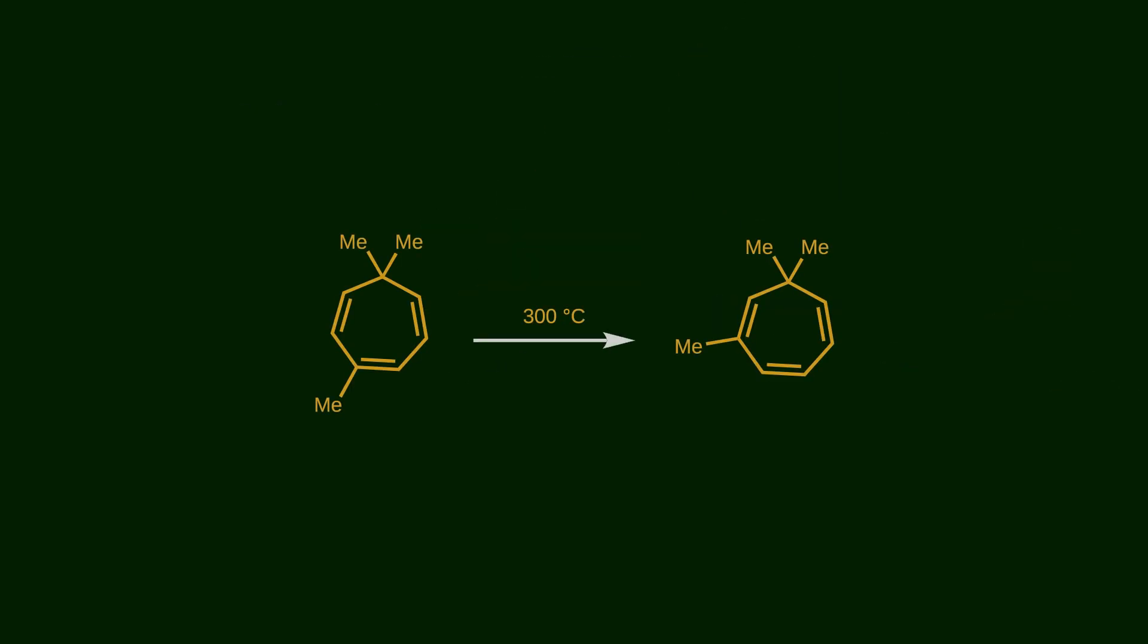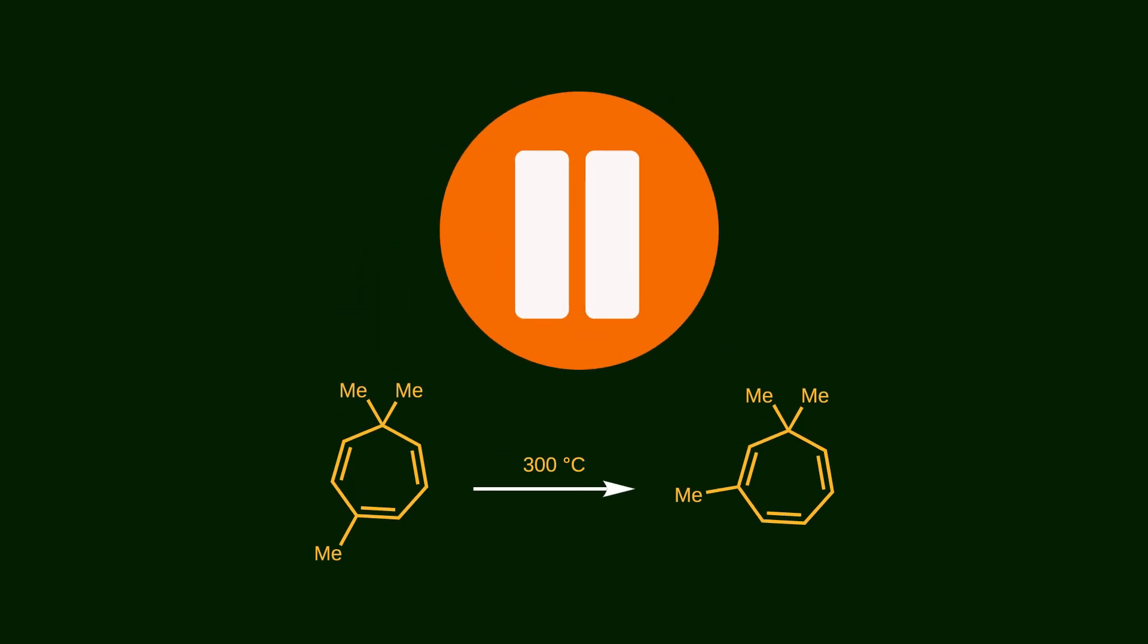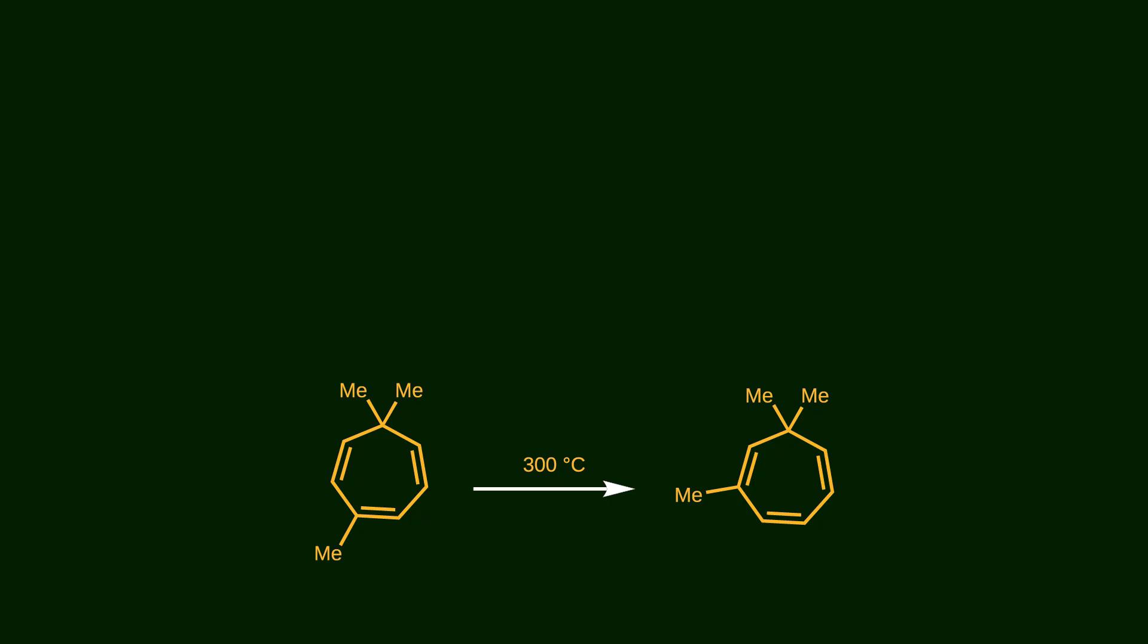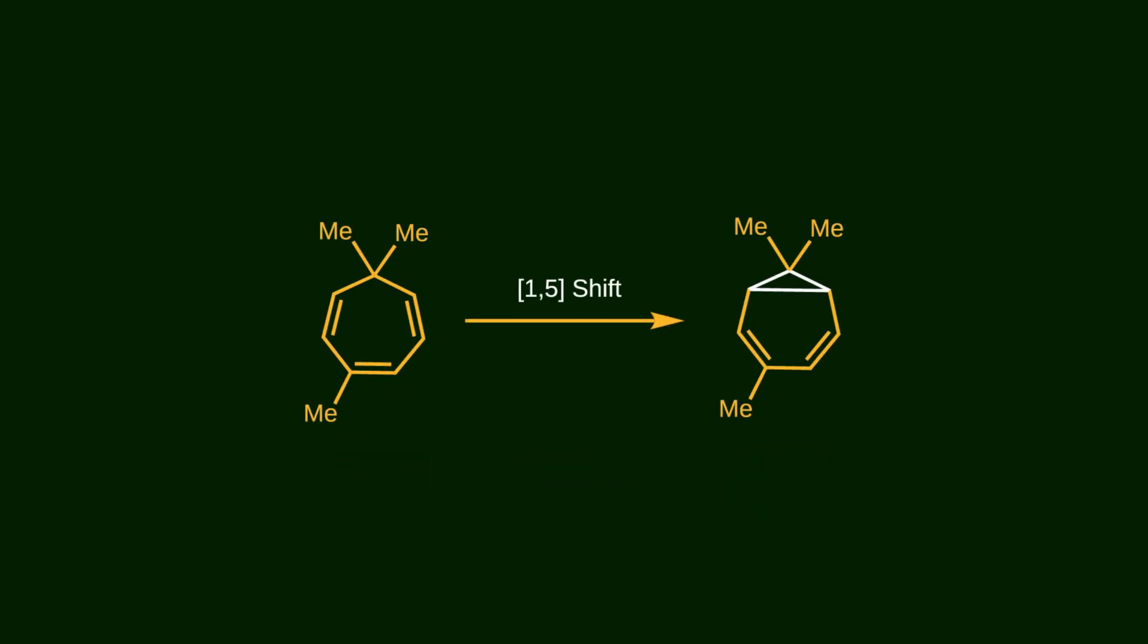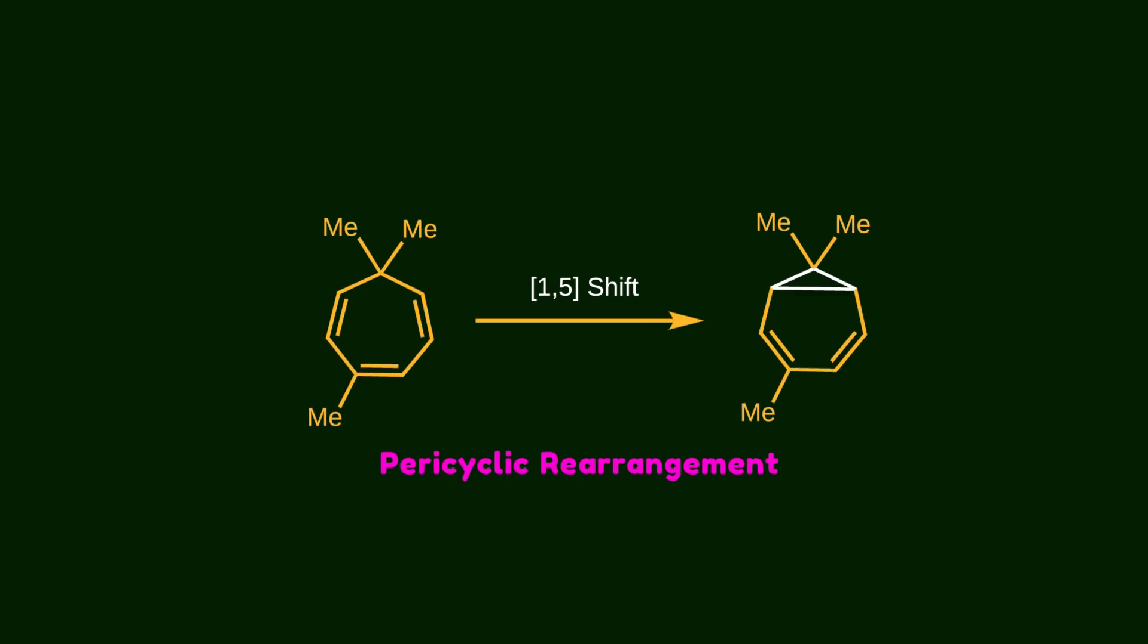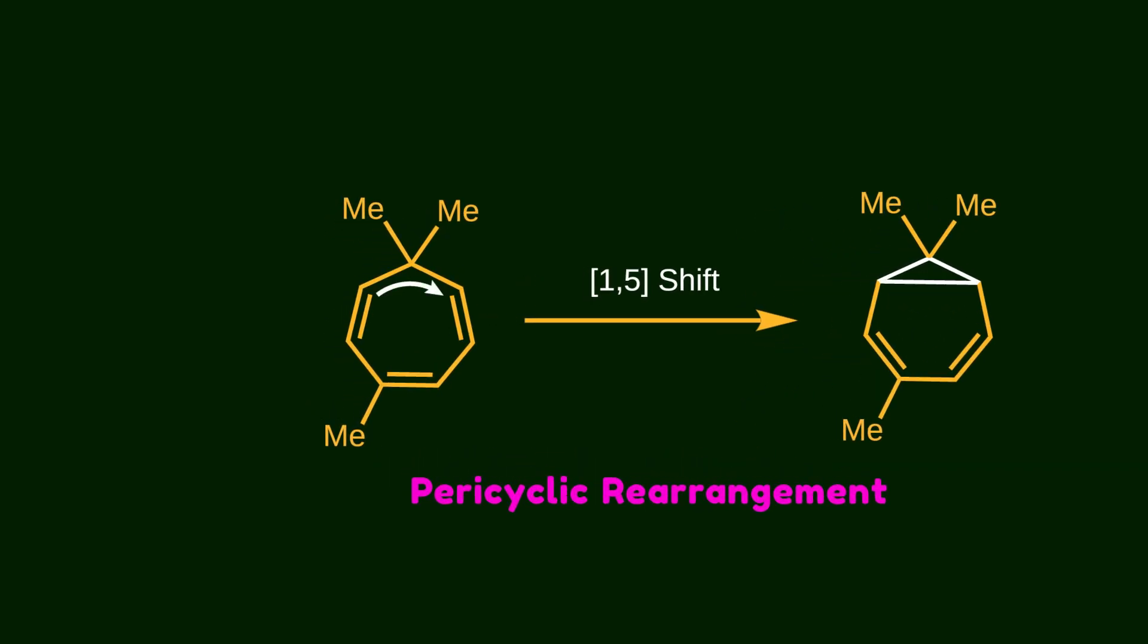Now let's go back to our case. Considering Woodward and Hoffman's rules, pause the video and try to propose a mechanism for this migration. As you might guess, this is not just a simple migration. Notice that there are 3 alternating double bonds with 6 pi electrons. So it is susceptible to a pericyclic rearrangement involving 6 pi electrons. In this case, the pi electrons attack this double bond to create a new sigma bond. And the remaining double bonds shift their position, leading to the formation of a 6-membered ring fused to a 3-membered ring.